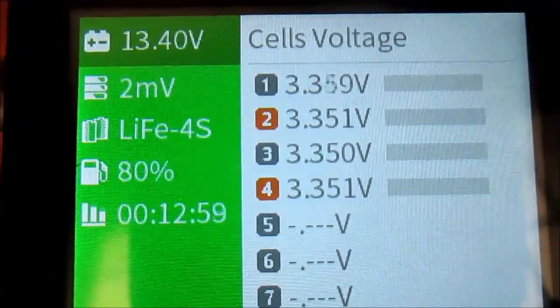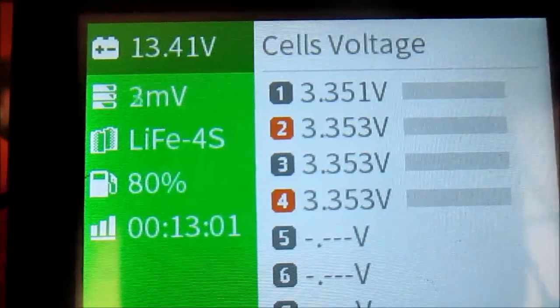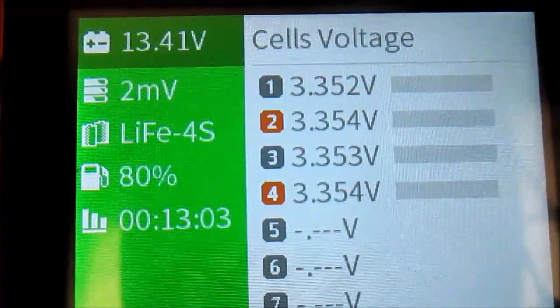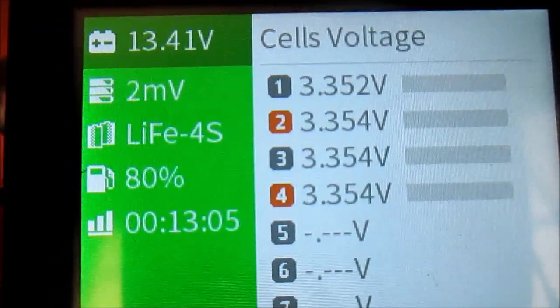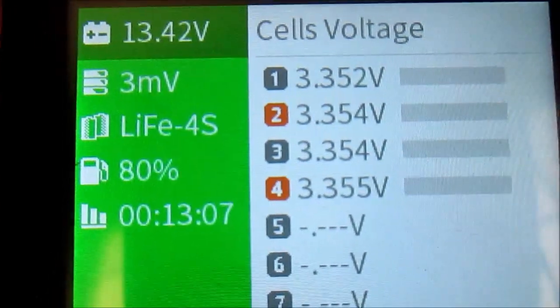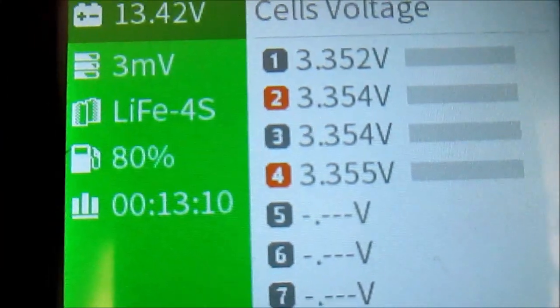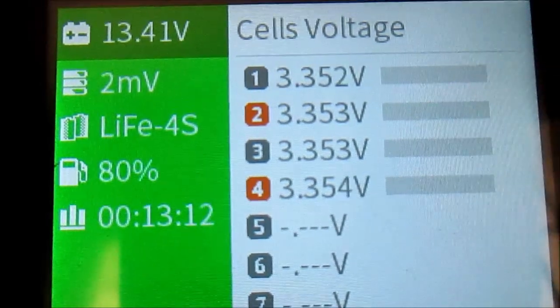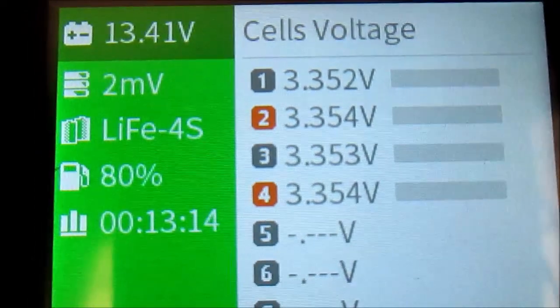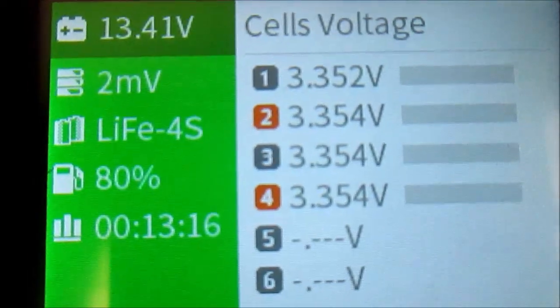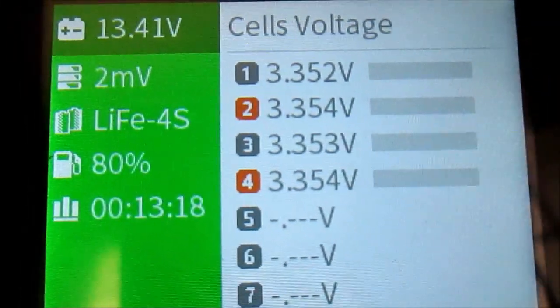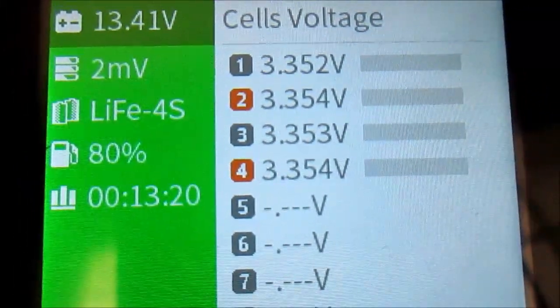To have a look at what the battery meter is showing us specifically, it's indicating a 13.41 volts state of charge for the entire pack. It's indicating a difference of two millivolts, as high as three at this point between any of the four cells.